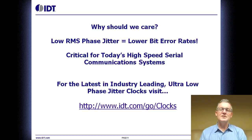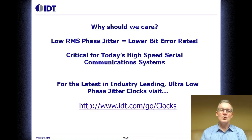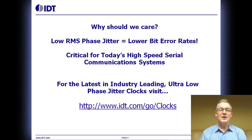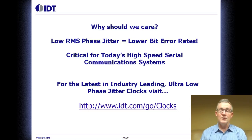Also, in summary, why should we care? Low RMS phase jitter equals low bit error rates. This is critical for today's high-speed serial communications like 10 gig, 40 gig, 100 gigabit ethernet, PCI Gen 3, and others. For the latest industry-leading ultra-low phase jitter clocks, please visit www.idt.com/go/clocks. Thanks for viewing today's video and thanks for considering IDT clock devices.